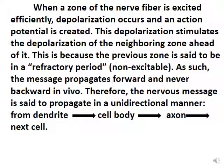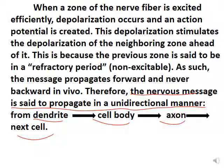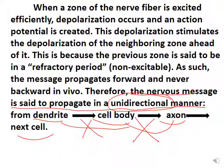When a zone of a nerve fiber is excited efficiently, depolarization occurs and an action potential is created. This depolarization stimulates the neighboring zone ahead. The previous zone is in a refractory period and is not excitable, so the message propagates forward and never backward — it moves in a unidirectional manner, from dendrite to cell body to axon, then to the next cell.